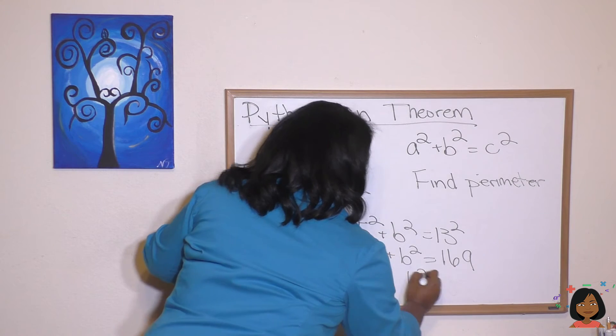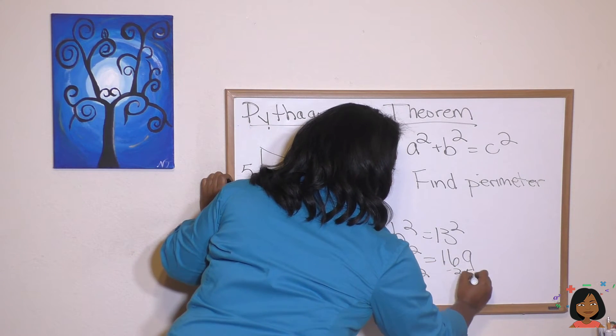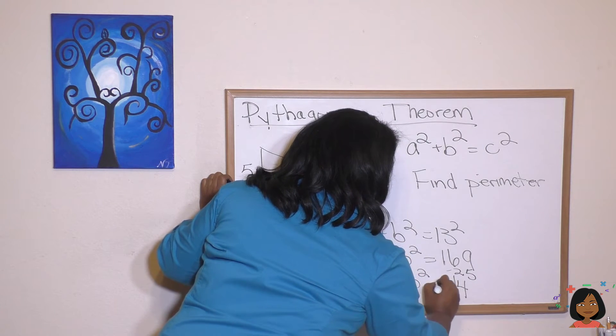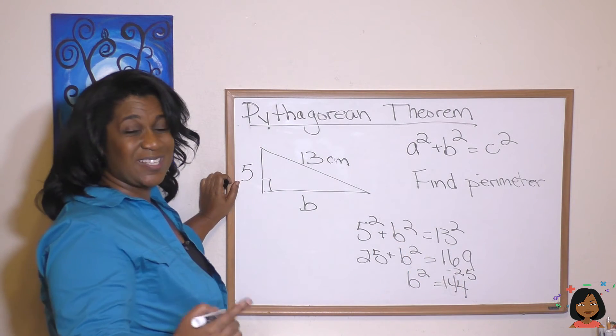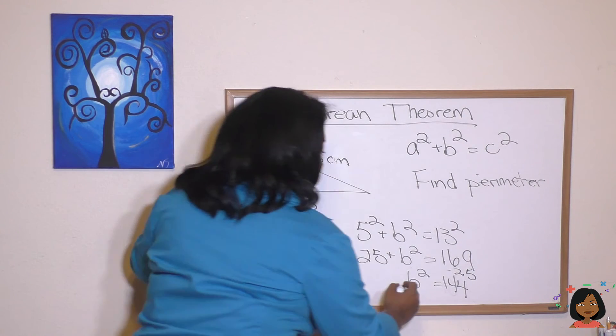Now let's solve. Let's get rid of our 25 by subtracting 25 from this side. And we get 144. So b squared equals 144. b equals the square root of 144.